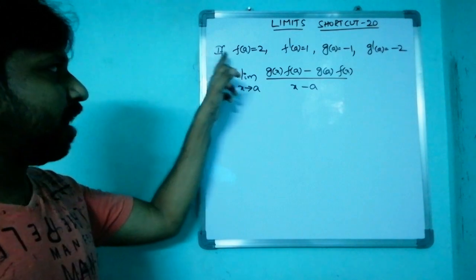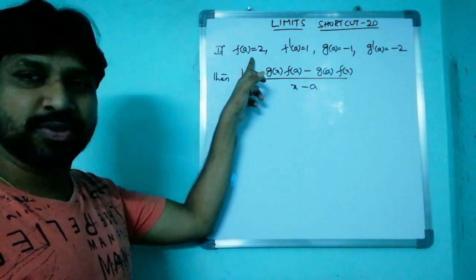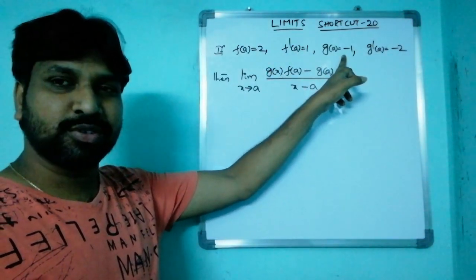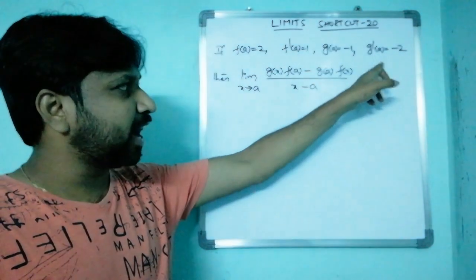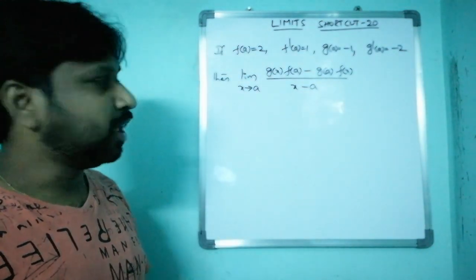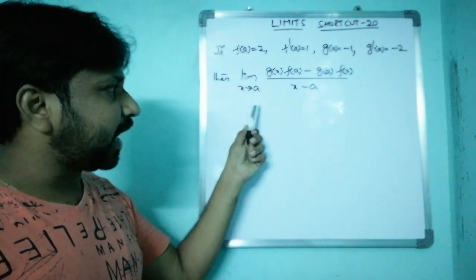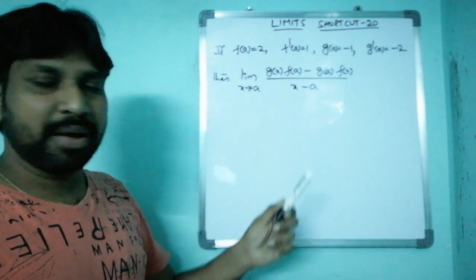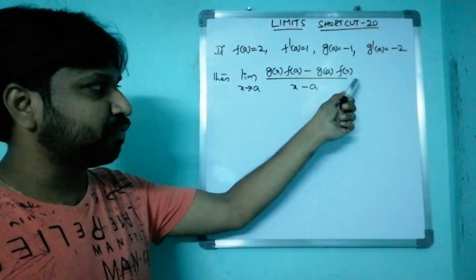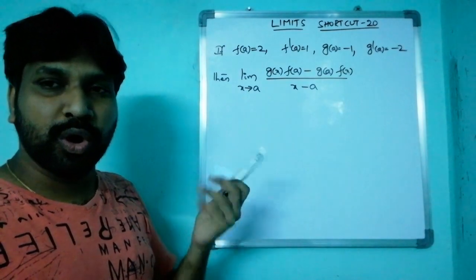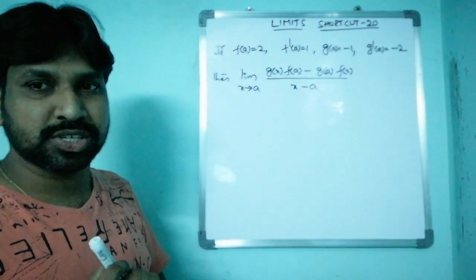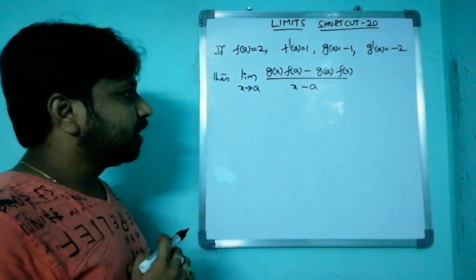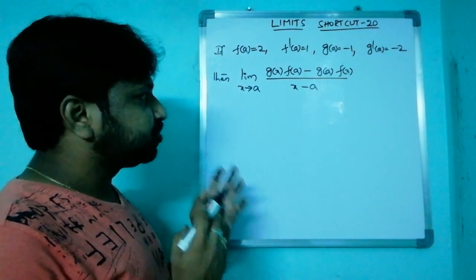Coming to the question: if f(a) = 2, f'(a) = 1, g(a) = -1, and g'(a) = -2, then find the limit as x tends to a of [g(x)·f(a) - g(a)·f(x)] / [x - a].